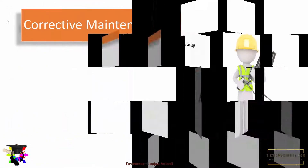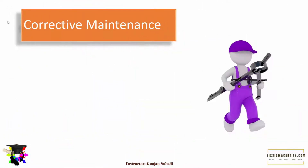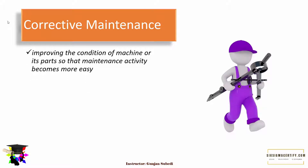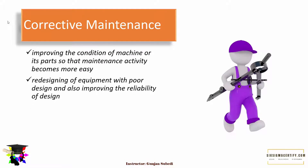There is another type of maintenance called corrective maintenance, which is basically aimed at improving the condition of the machine or its parts so that maintenance activity becomes easier. It can include redesigning equipment with poor design and also improving the reliability of the design.